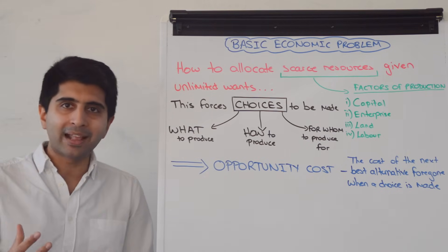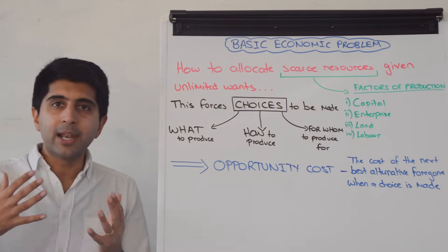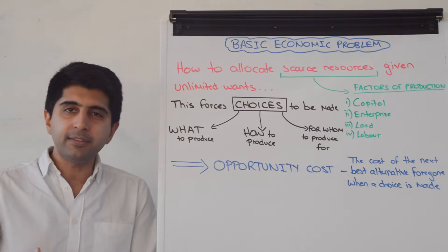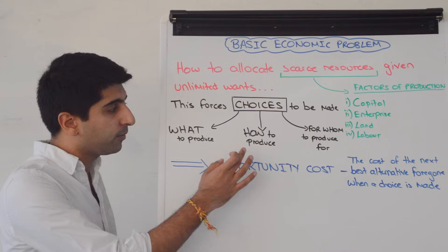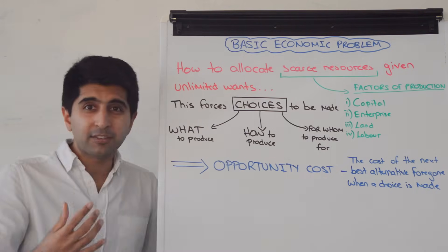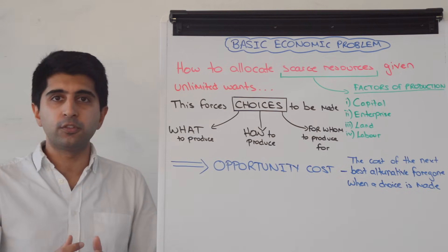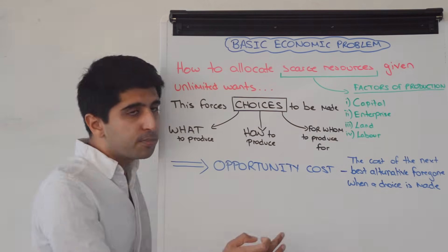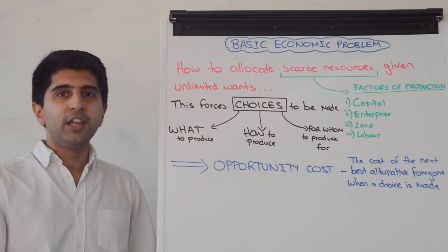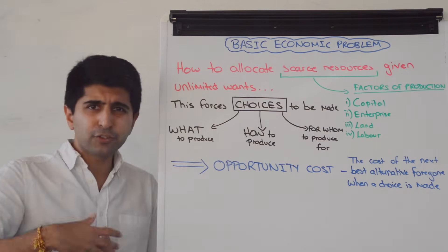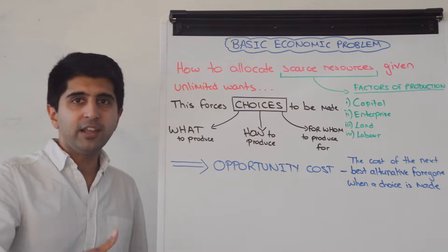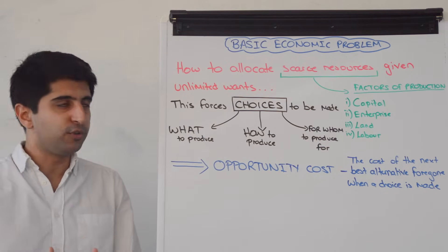In a market economy, how do we answer those questions? What to produce? In a market economy, businesses decide based on consumer demand. How to produce it? Businesses decide based on what's most cost-effective and most productive, to minimise the use of scarce resources. Businesses that are best at producing at lowest cost survive. And for whom to produce? In a market economy, that question is answered by those who have enough income to afford goods and services in a market — if you can afford it, then you get it.